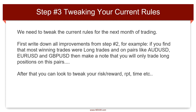Step three: tweaking your current rules. We need to tweak the current rules for the next month of trading. First, write down all improvements from step two. For example, if you find the most winning trades were long trades on pairs like AUD/USD, EUR/USD, and GBP/USD, then make a note that you will only trade long positions on these pairs. After that, you can look to tweak your risk-reward, risk per trade, timing, and other factors — but overall, don't change too many rules right away.